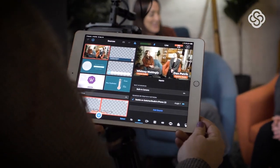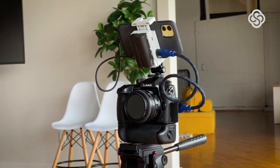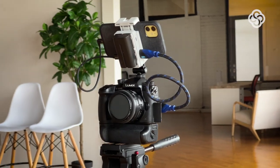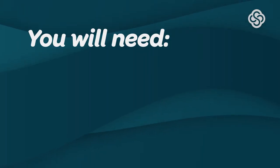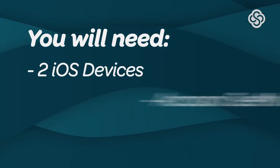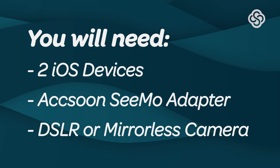For this example, we will be connecting a DSLR camera as a camera angle in Switcher Studio. This configuration will require two iOS devices, the SEMO adapter, and a DSLR camera.